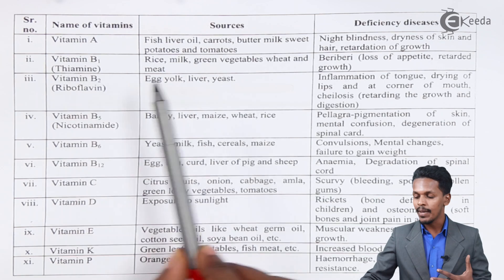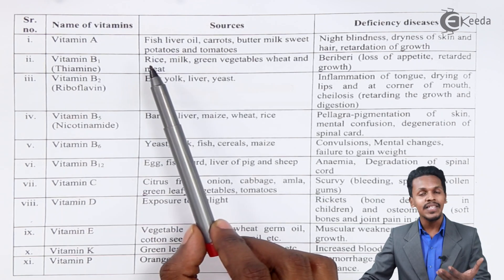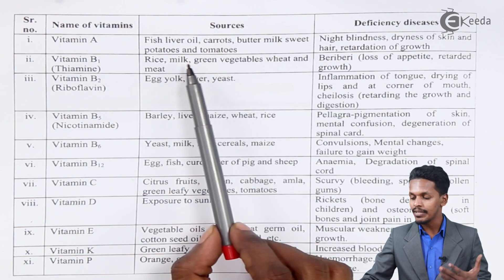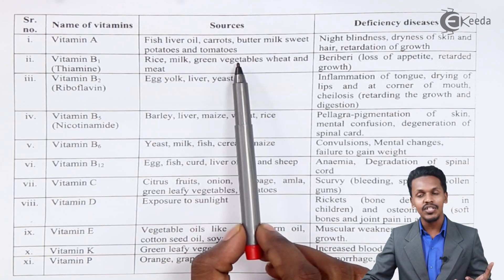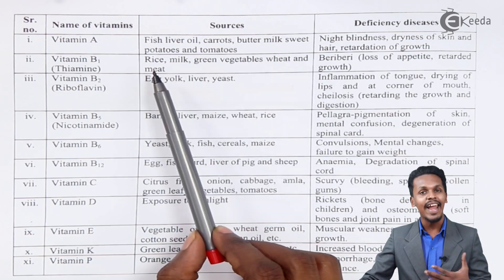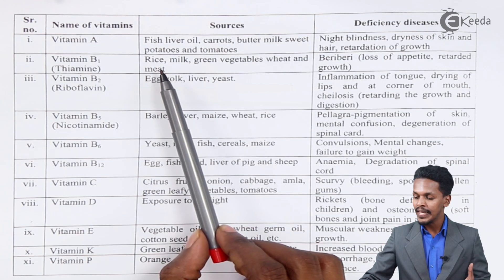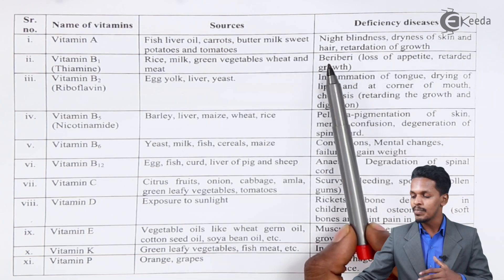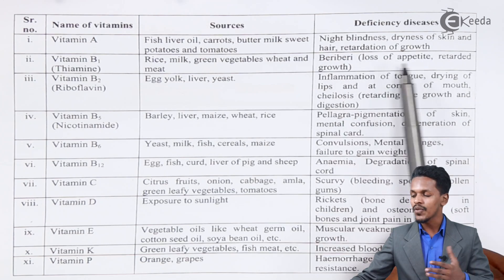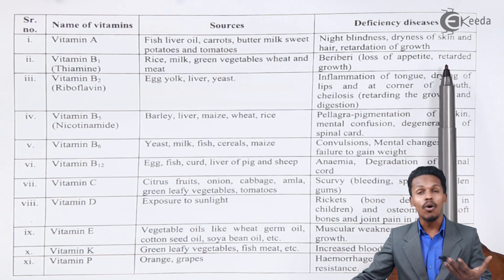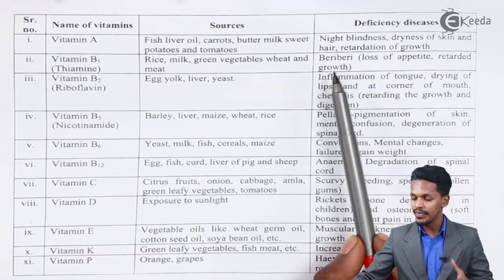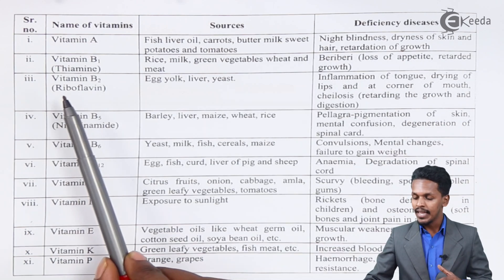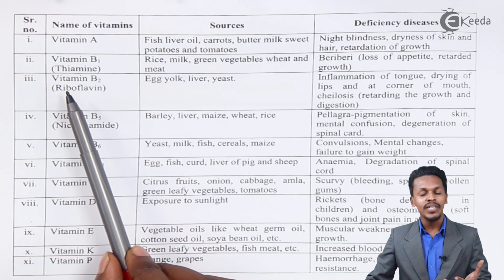Similarly, Vitamin B1 is known as thiamine. Thiamine is basically present in rice, milk, green vegetables, wheat, and meat. The deficiency disease caused by it is beriberi, which includes loss of appetite and retardation of growth.